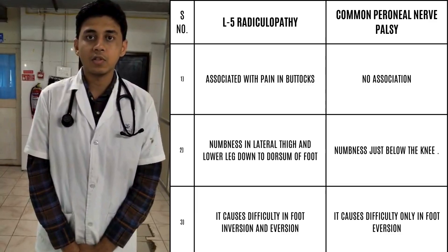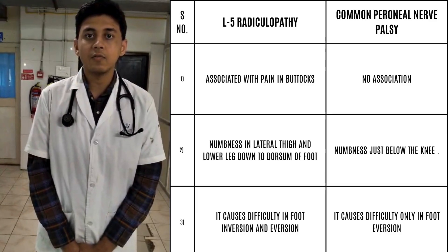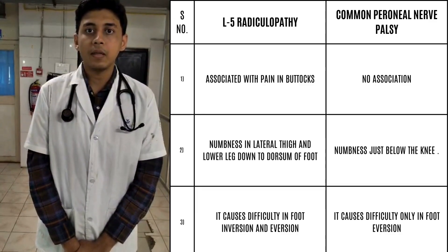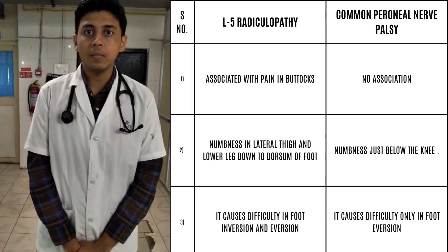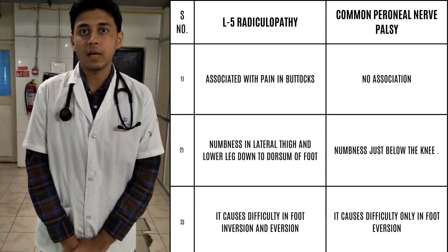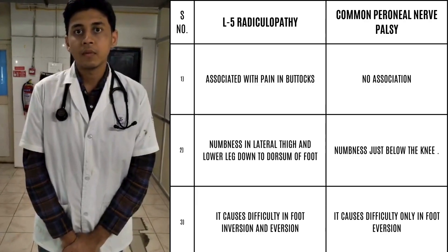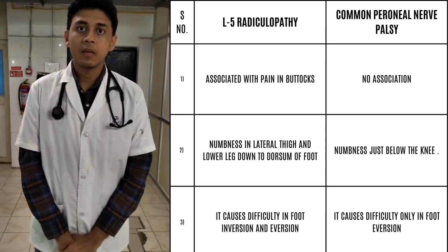In this patient, we saw absence of dorsiflexion and inversion in the right foot, with pain in the buttocks and numbness extending from the lateral aspect of the thigh to the dorsum of the foot. Hence, we conclude this is a case of L5 radiculopathy.